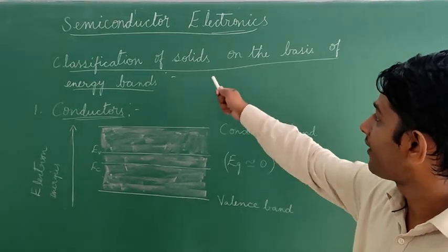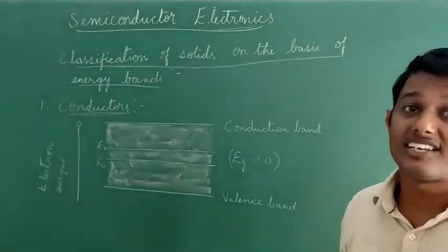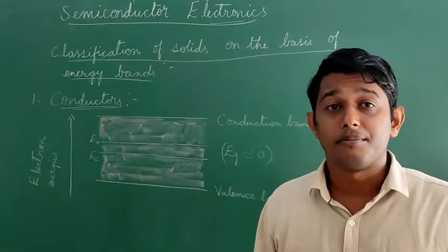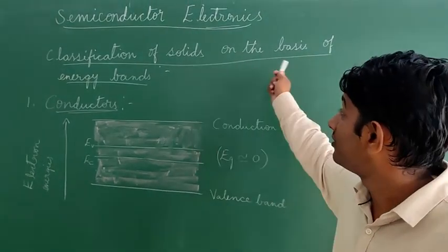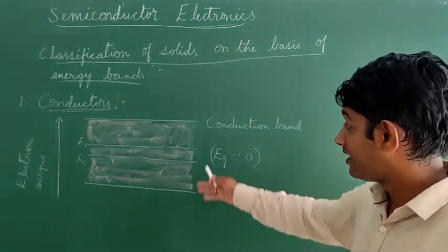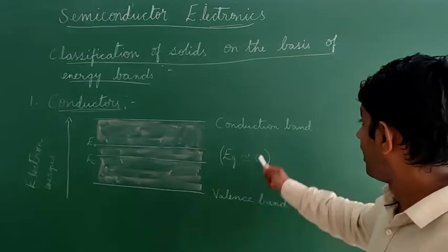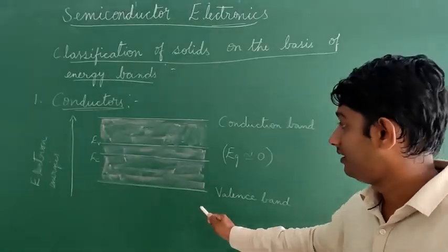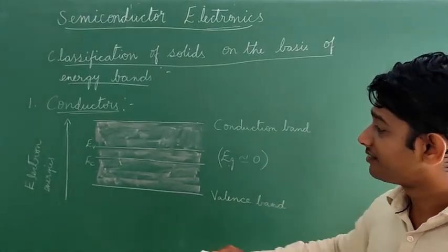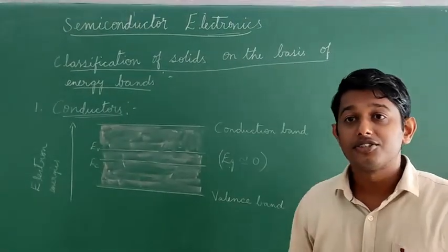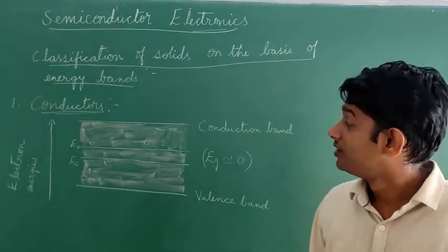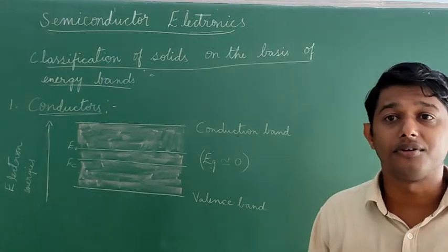The next topic is classification of solids on the basis of energy bands. We classify solids into conductors, semiconductors, and insulators. In a conductor, the energy band gap is almost zero — the valence band and the conduction band are overlapped. Therefore, electrons from the valence band can easily move into the conduction band, and the conduction band is completely filled by free electrons, resulting in a huge number of free electrons.